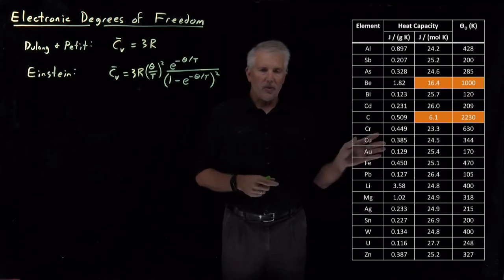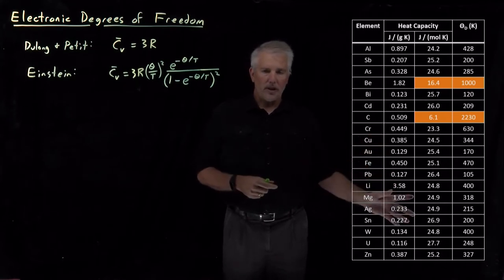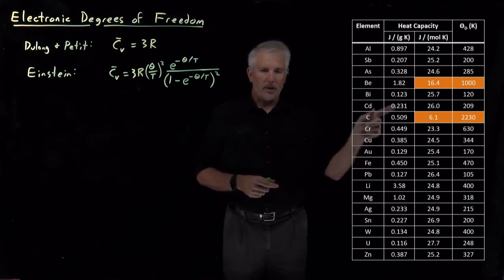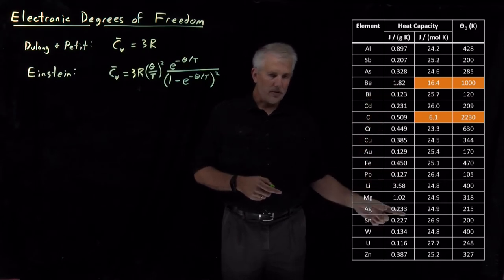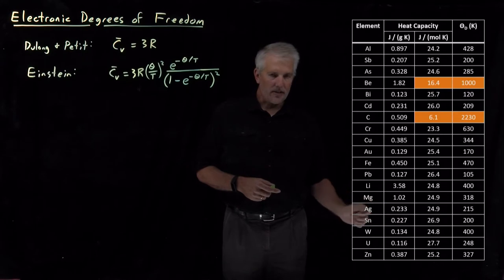So this explains why many of the values are close to the Equipartition Theorem prediction and some of the values are a little too low. It can explain some of these other values that are too large, and I'll highlight some of the values that do appear too large on this table.